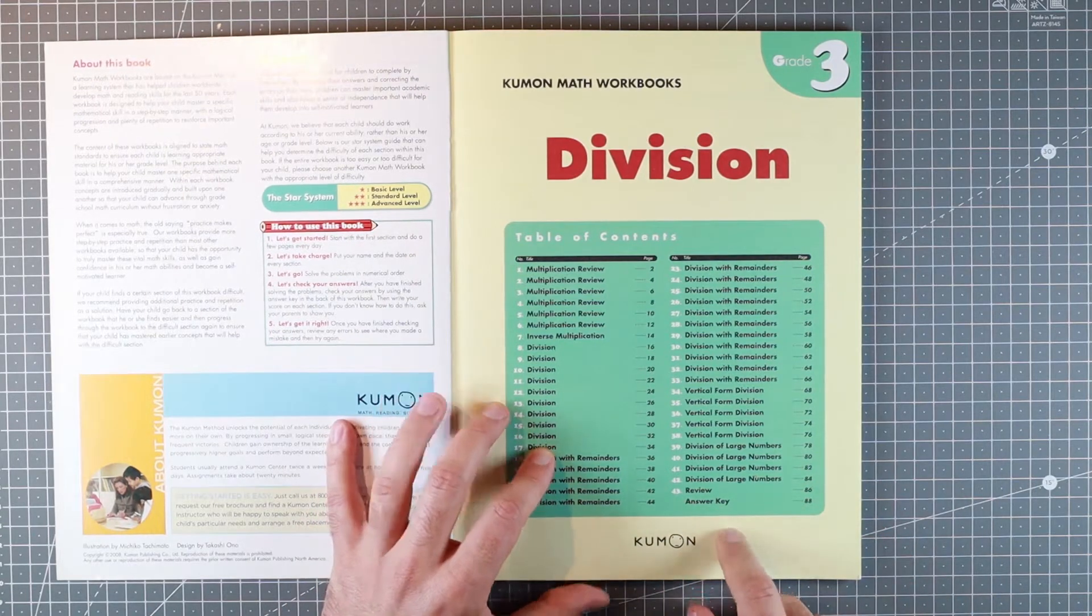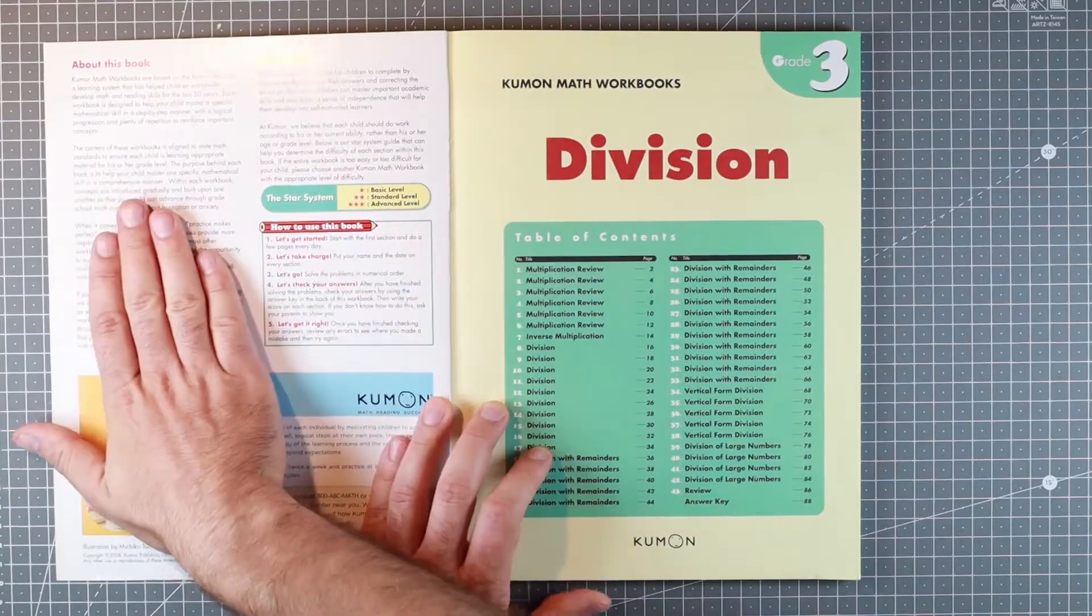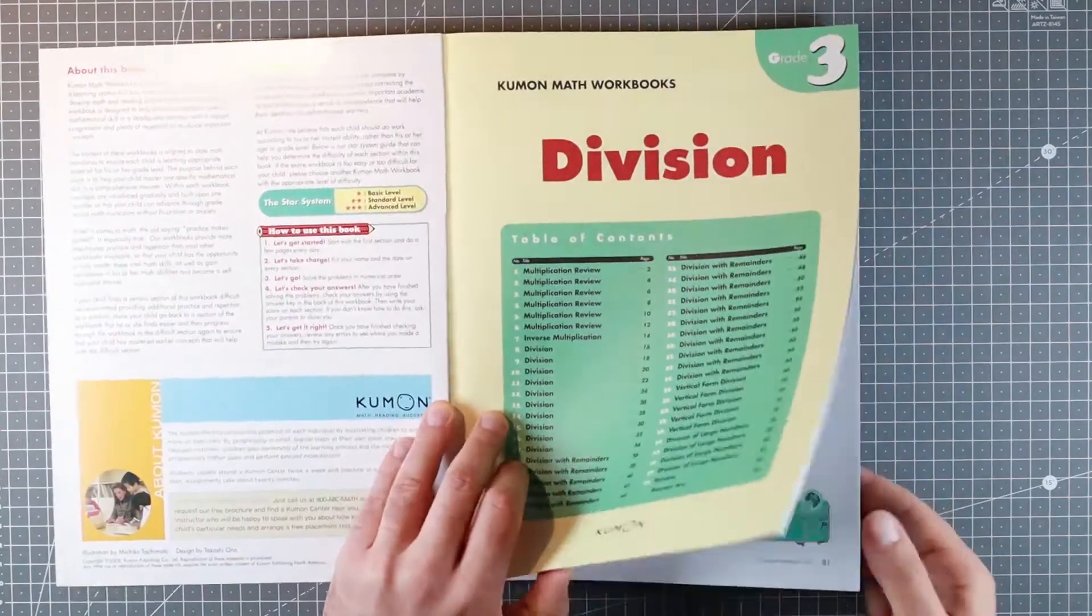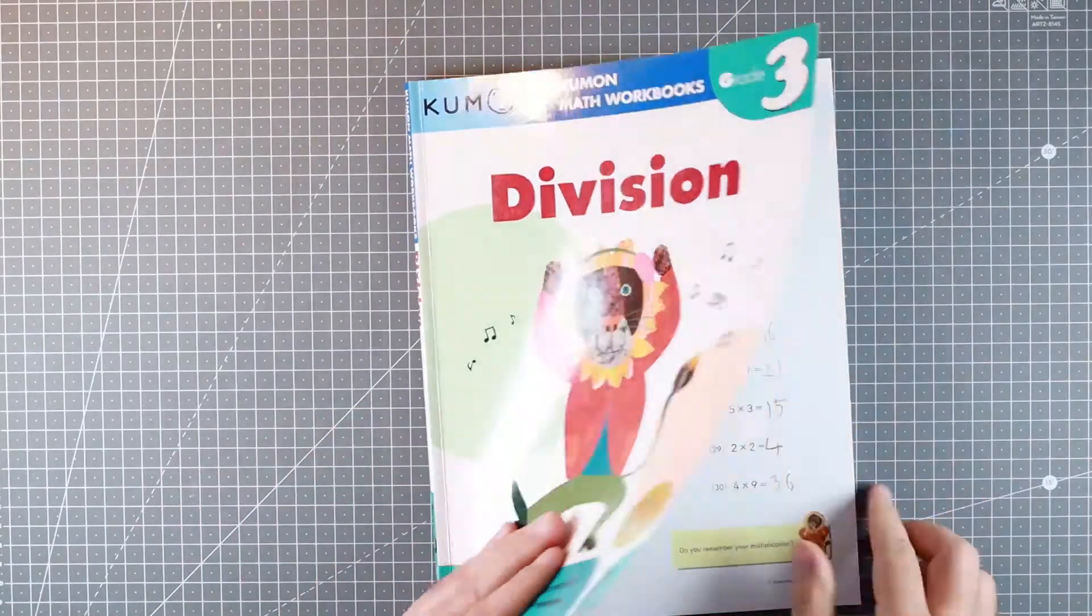Then vertical division and division of large numbers. It's got a review and answer key at the back, it's got instructions for parents, it's got the rest of the Kumon series on the back, it's your classic well-done Kumon book.